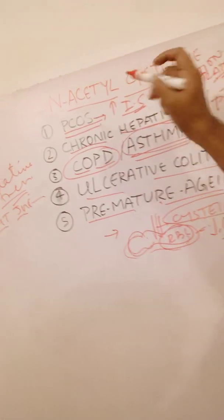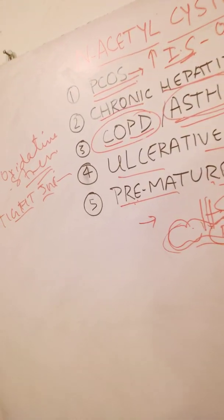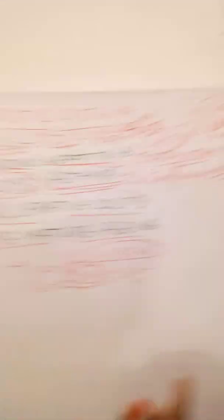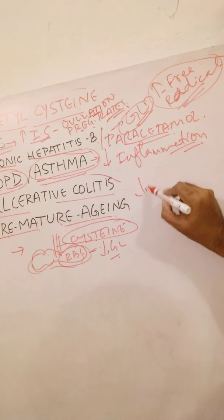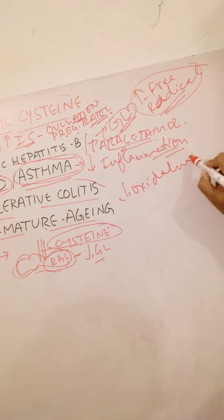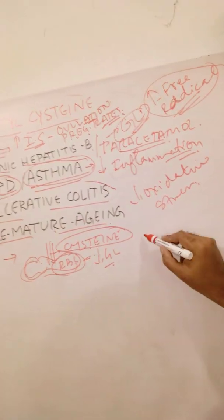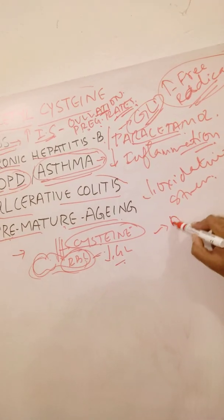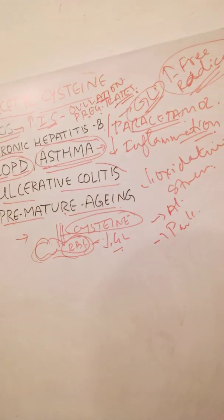By taking N-acetylcysteine, you can remarkably reverse these conditions like premature graying of hair, premature wrinkling of skin, and other degenerative changes. It can also boost your brain health by decreasing oxidative stress, increasing glutathione inside your brain, and protecting your brain cells. This makes it very helpful in conditions like Alzheimer's, Parkinson's, and other neurological conditions.